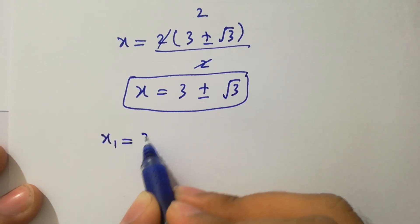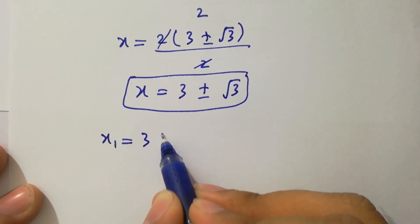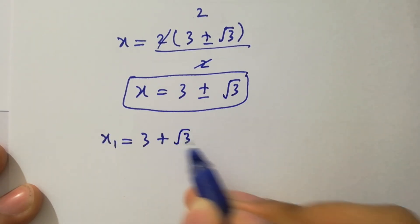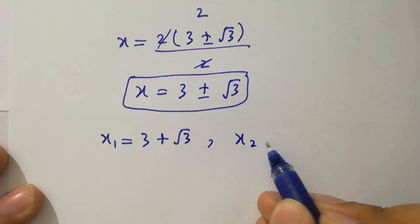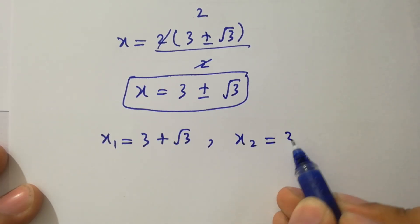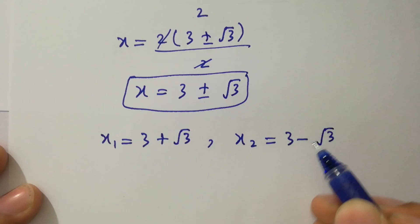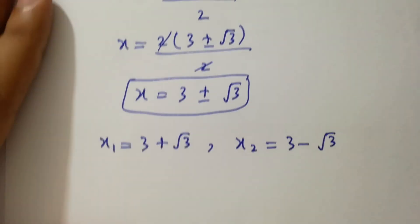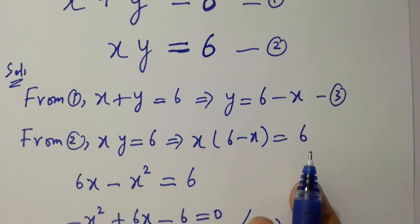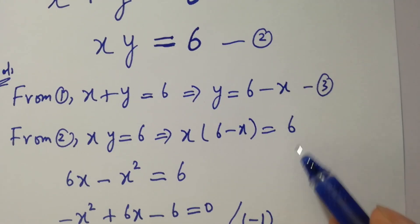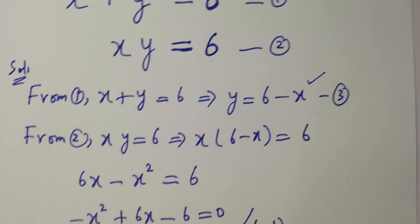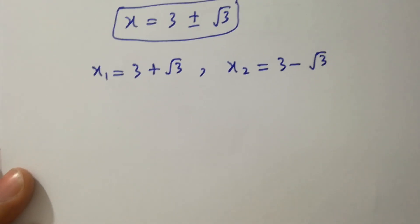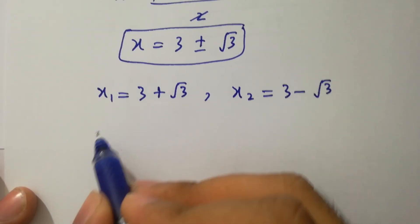So the two values of x are: x1 equal to 3 plus square root of 3 and x2 equal to 3 minus square root of 3. Recall the third equation y equal to 6 minus x to find the corresponding values of y.